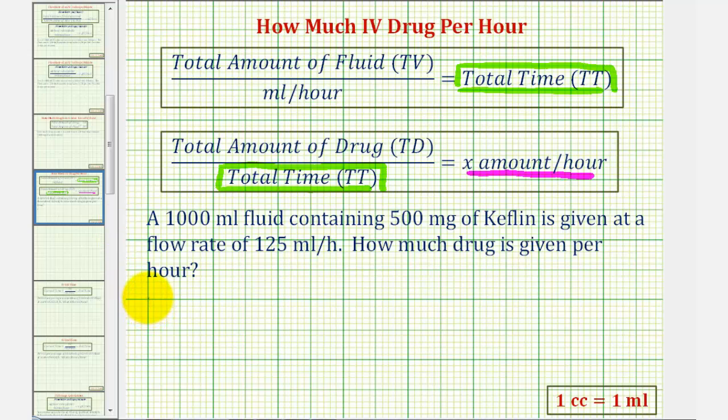So again, for the first step, we'll find the total time, which should be 1,000 milliliters, the total amount of fluid, divided by the flow rate in milliliters per hour, which is 125. Well, 1,000 divided by 125 is equal to 8, so the total time is 8 hours.